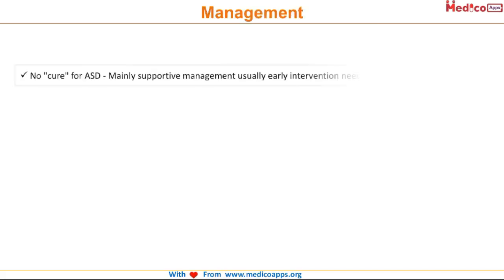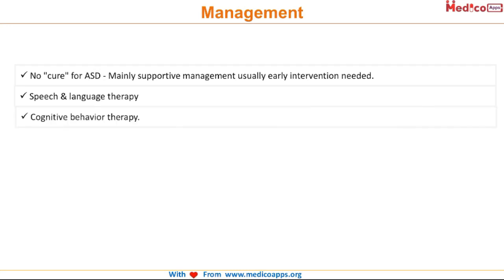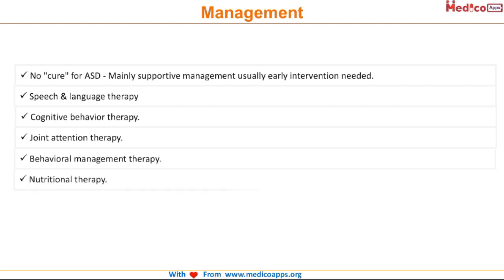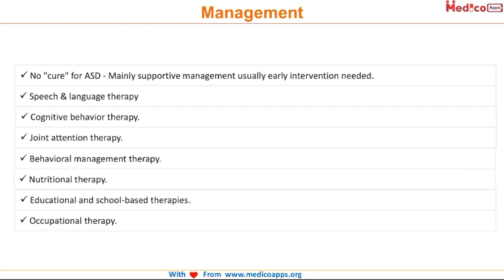Moving forward to management: there is no cure for autistic spectrum disorder, so mainly supportive management is used and early intervention is needed. Speech and language therapy is needed because speech is delayed. Also needed are cognitive behavior therapy, joint attention therapy, behavior management therapy, nutritional therapy, educational and school-based therapy, and occupational therapy — all of which are supportive in the care of autistic spectrum disorder.